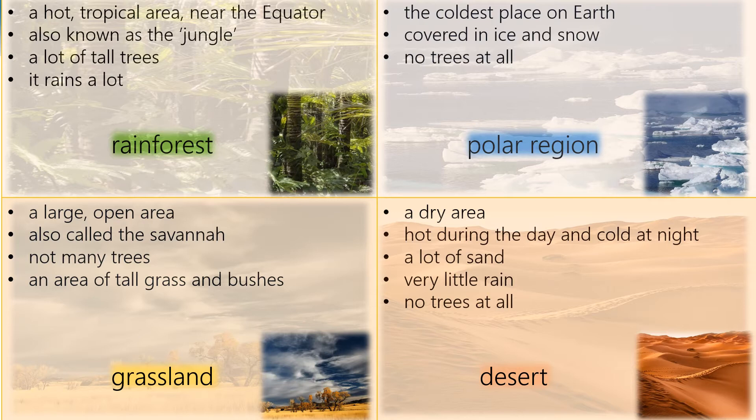Now let's check whether you did everything correctly. A rainforest is a hot tropical area near the equator, also known as the jungle. There are a lot of trees there and it rains a lot. The polar region is the coldest place on Earth — it's covered in ice and snow and there are no trees at all. The grassland is a large open area, also called savannah — not so many trees, but an area of tall grass and bushes. The desert is a dry area; it's very hot during the day and cold at night, with a lot of sand and very little rain, and no trees at all.